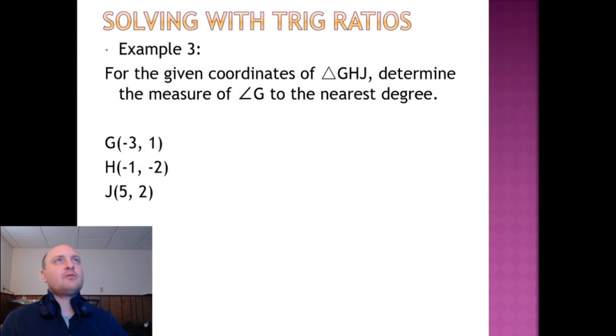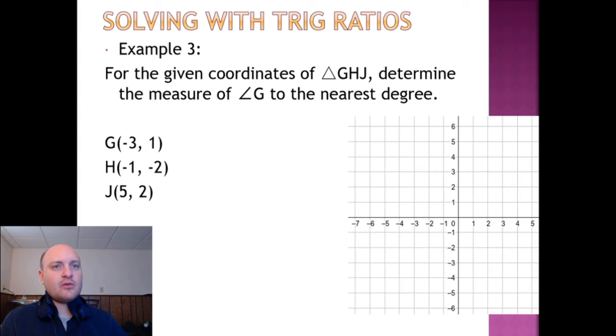For our final example here, we're solving for the measure of angle G to the nearest degree. In order to do this, we're going to need a coordinate grid so we can plot out the points and connect them to form the triangle. Next, I have to choose one of the trigonometric functions to use here. I'm going to choose GH and GJ because then I can use the adjacent and hypotenuse to solve with cosine. What I mean here is I have to solve for each side length. I'm going to have to do the distance formula on each one.